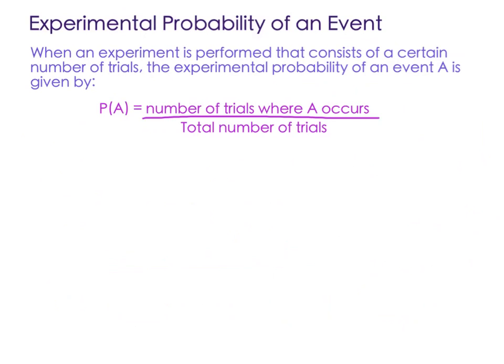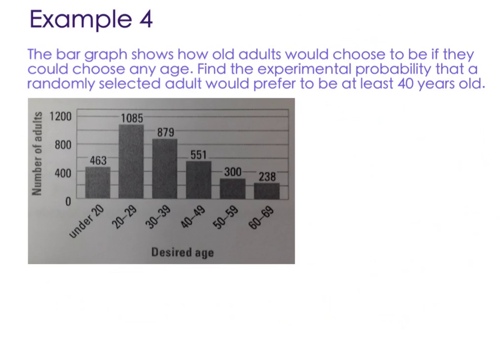So aside from theoretical probability, we also have experimental probability. And that's going to be where somebody's actually done an experiment that contained a certain number of trials. And so they've said, based on previous data, the experimental probability is, the probability of A would be the number of trials where A occurred over the total number of trials. So it's very much just like regular probability, only when it's experimental, it's based on something that somebody's already experimented with, I suppose.